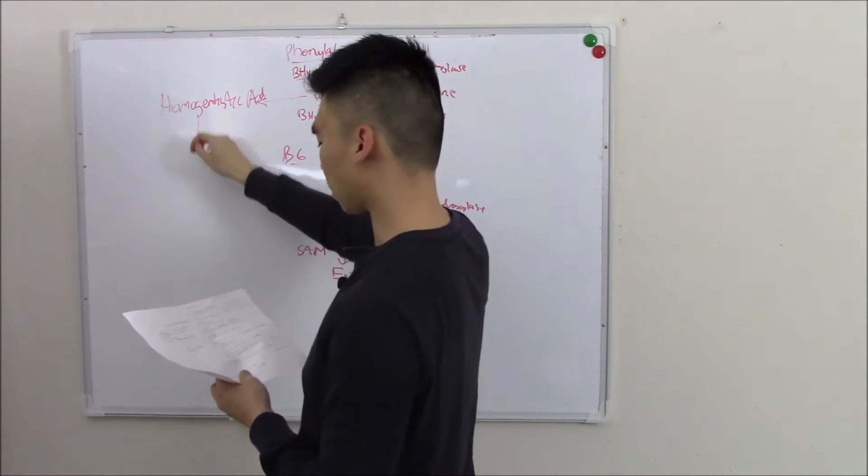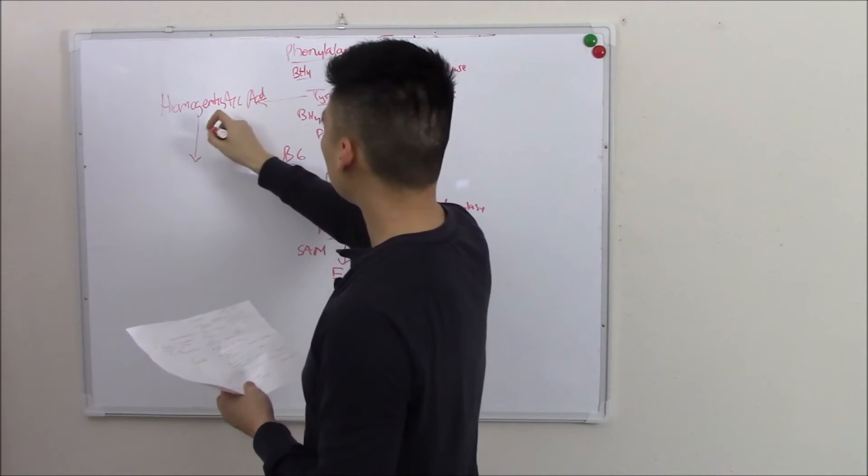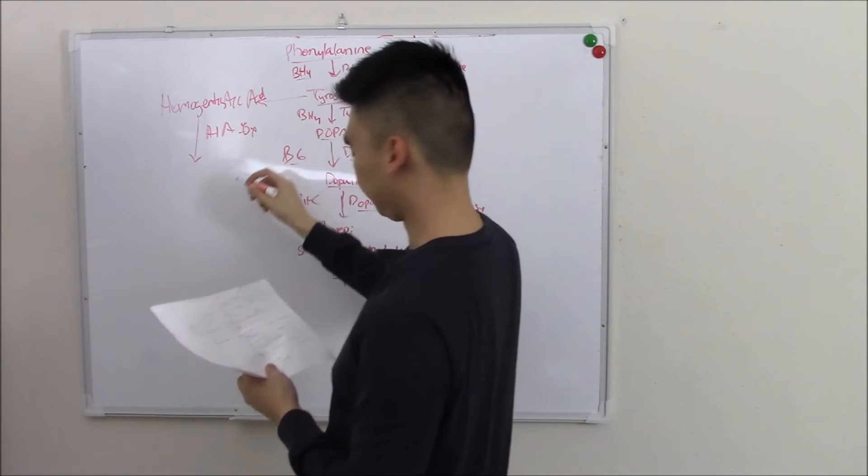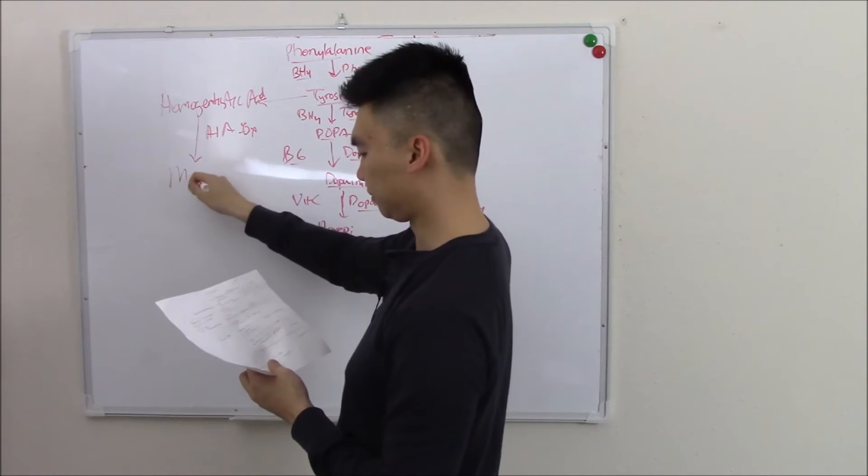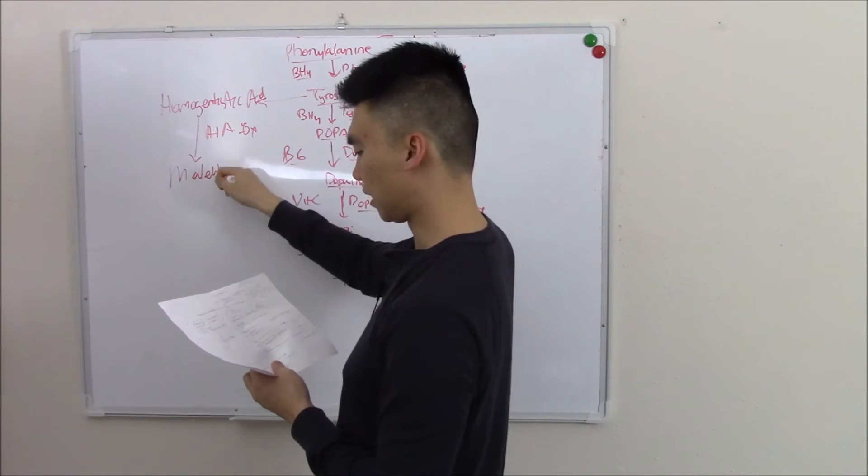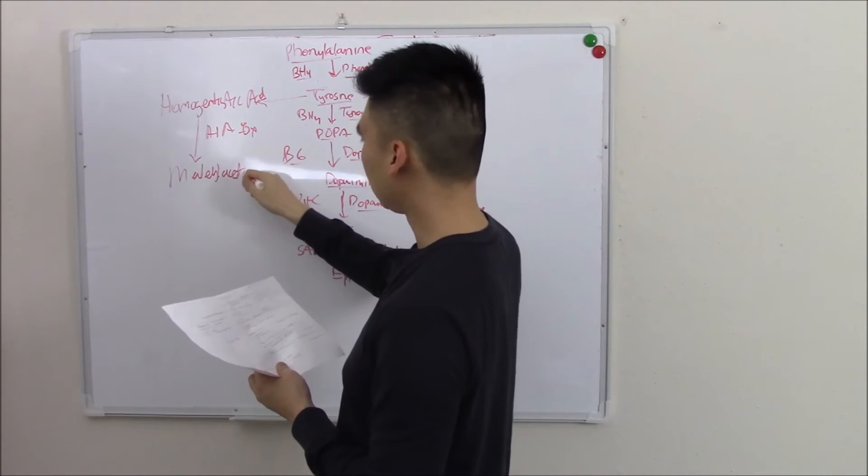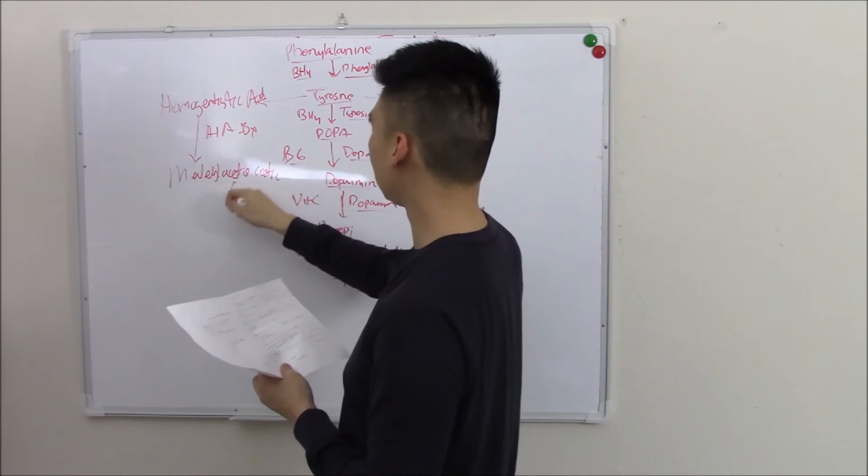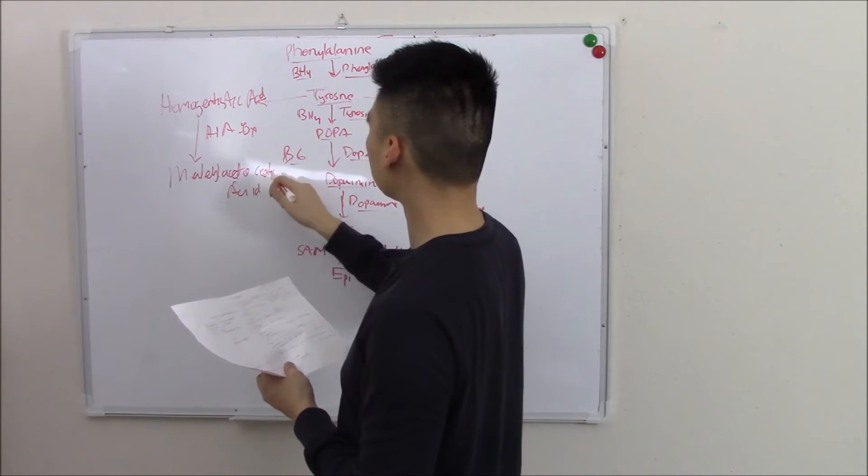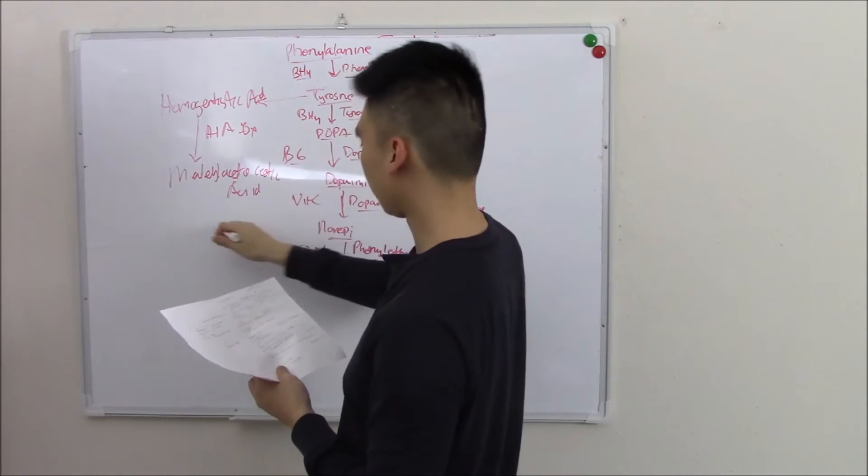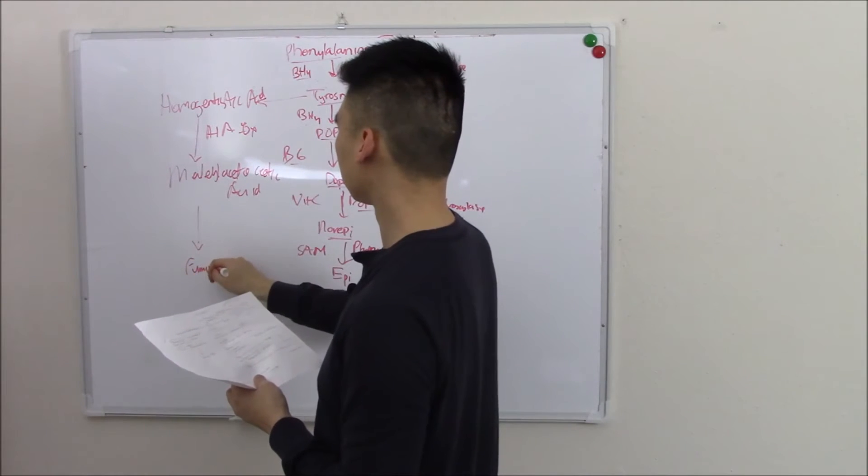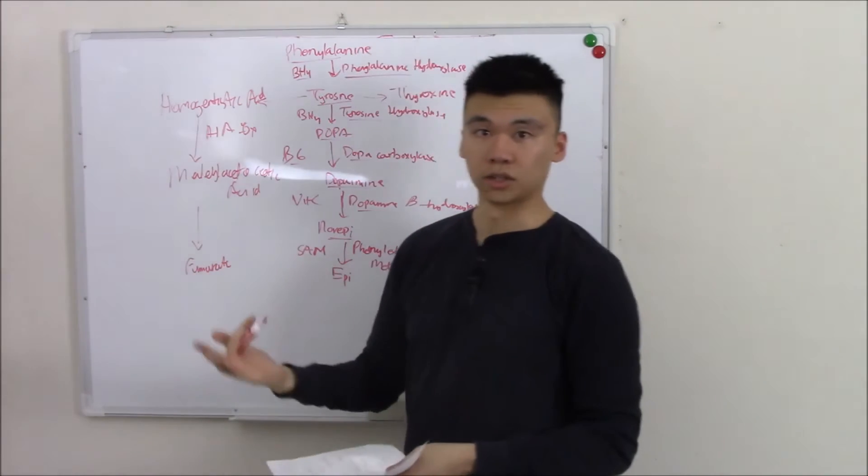Homogentistic acid gets worked on by homogentistic acid oxidase. That becomes maleylacetoacetic acid. And finally that becomes fumarate, which can go into the TCA cycle.